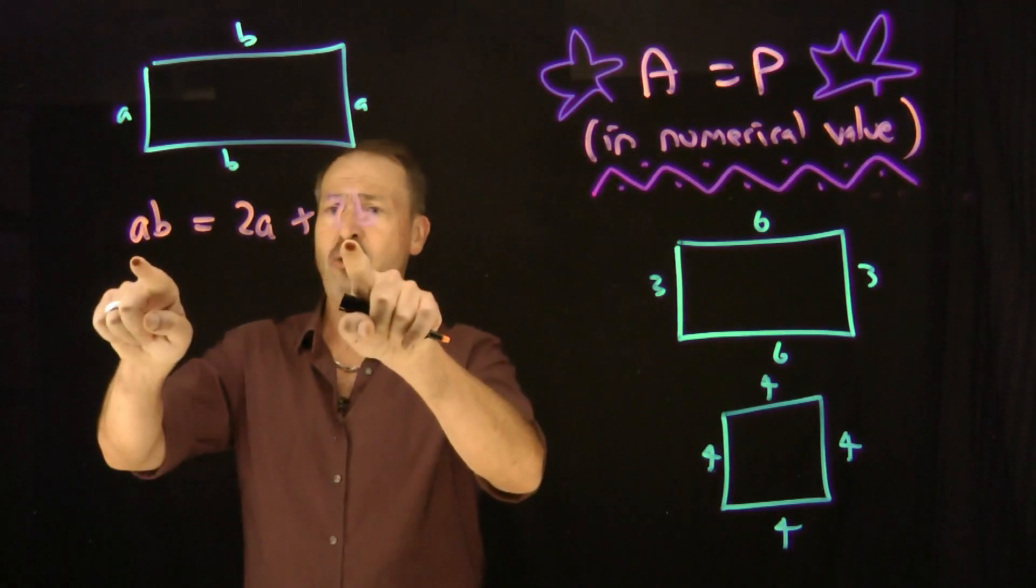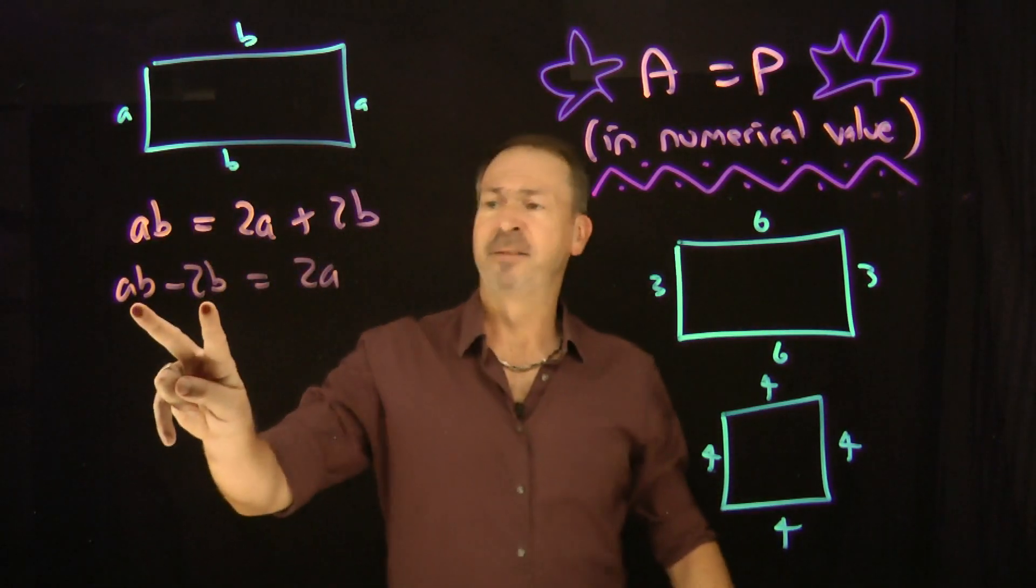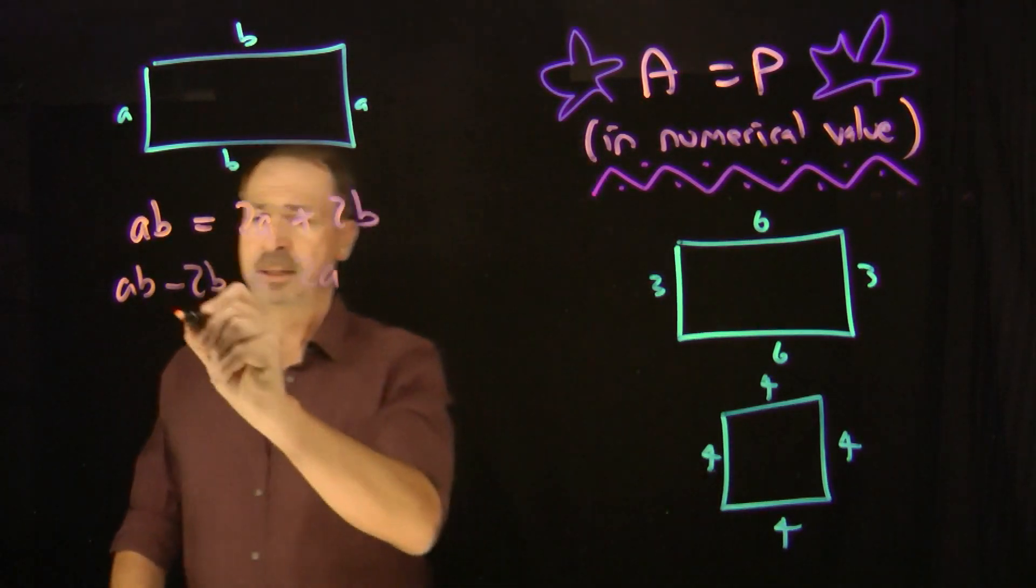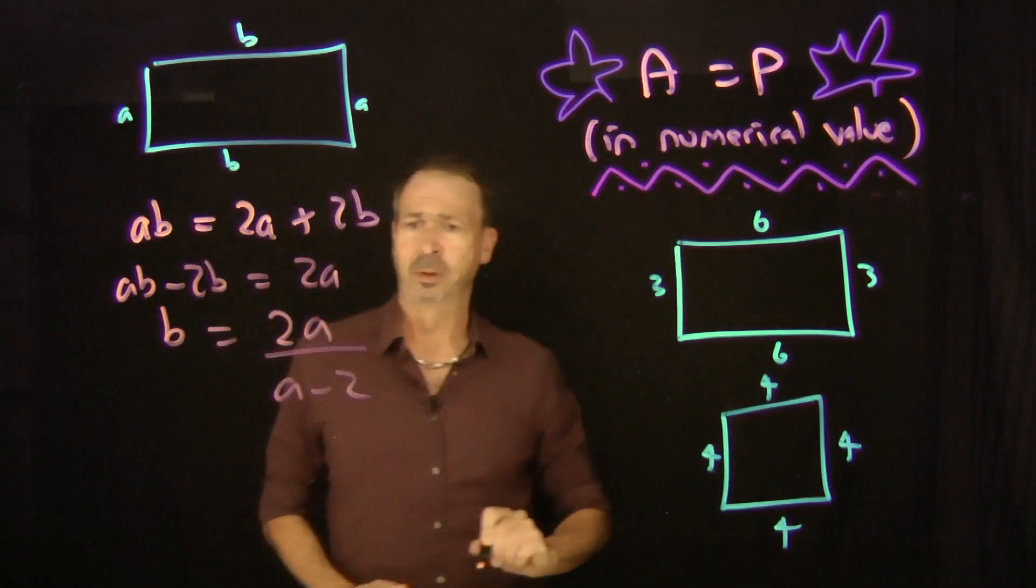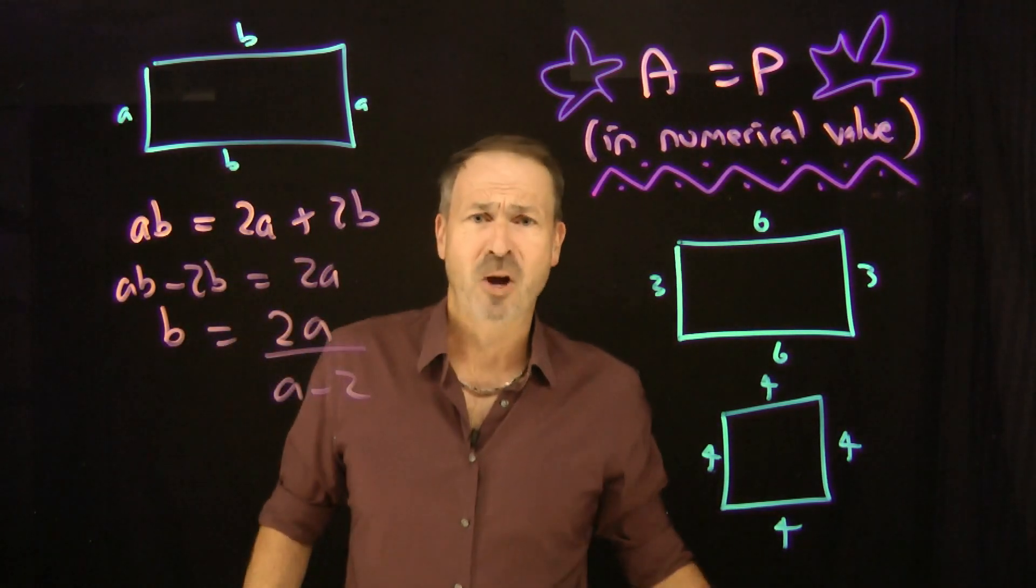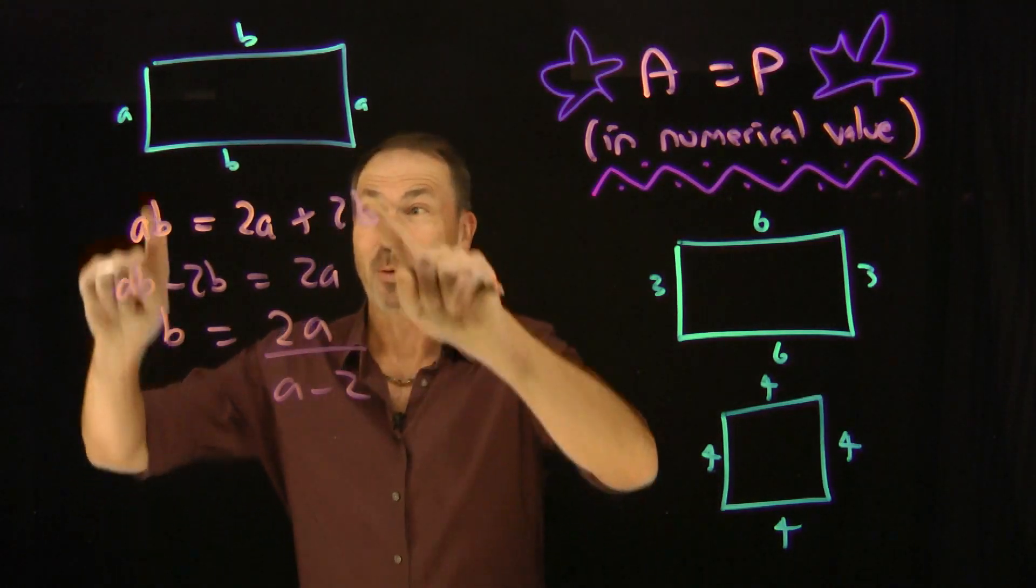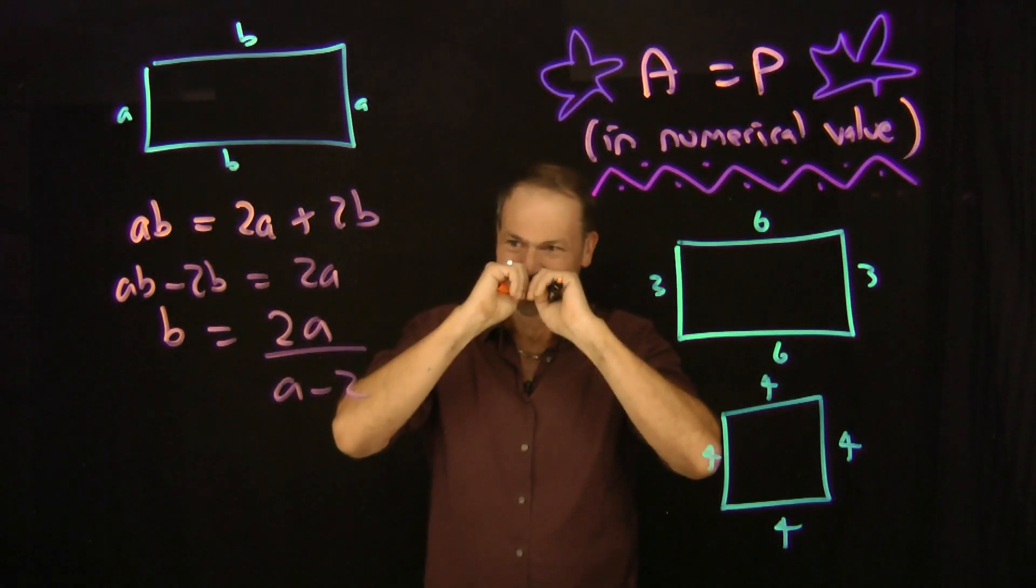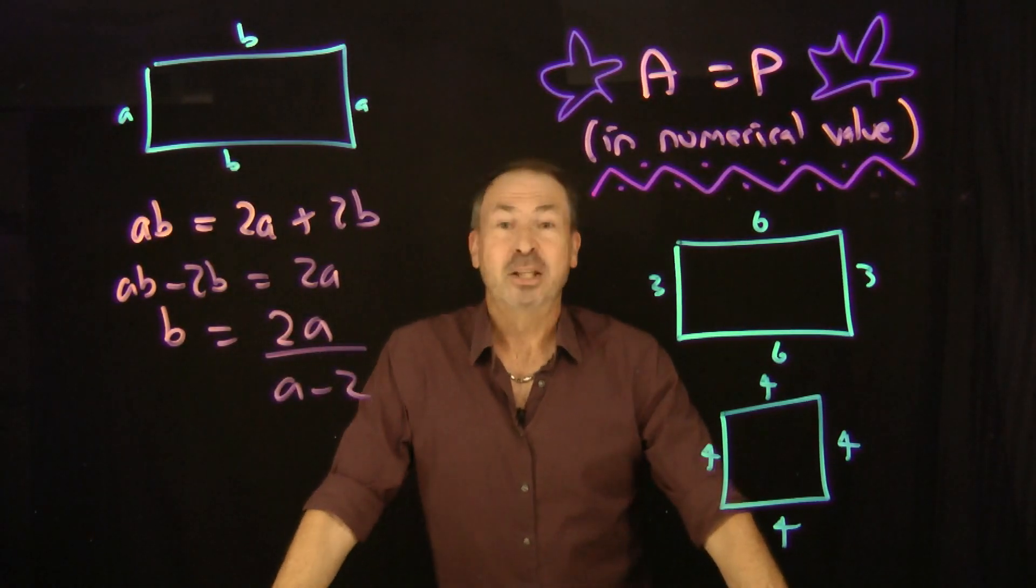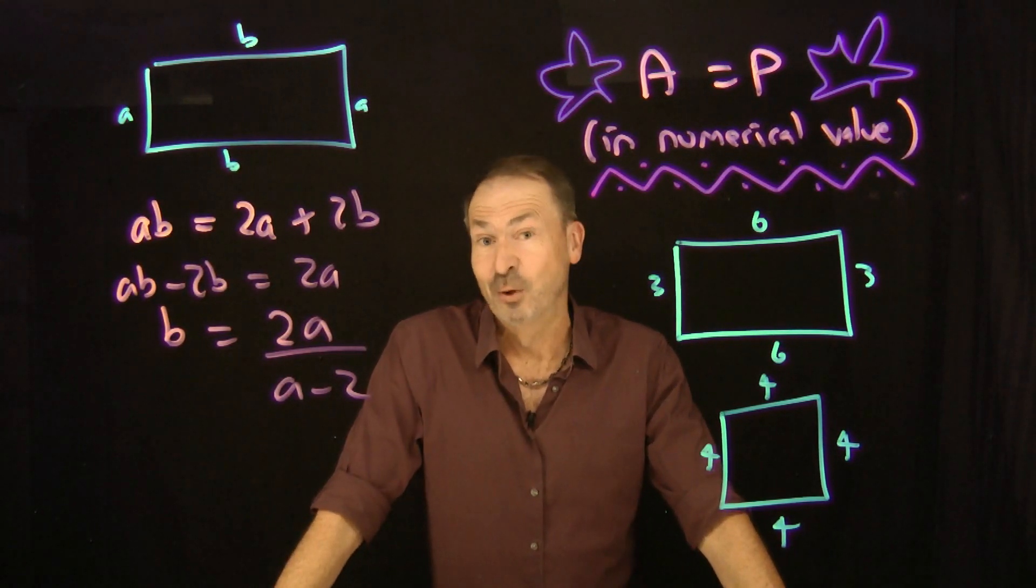Let me subtract 2b from both sides. ab minus 2b is 2a. Let me divide by a minus 2. So b is 2a over a minus 2. I'm a little bit nervous right now because it looks like b wants to be a fraction. I want a to be an integer and I want b to be an integer, but it looks like that's fractional. That makes me nervous. So right now I'm feeling stuck, I'm feeling a bit scared, but let me engage in some wishful thinking.